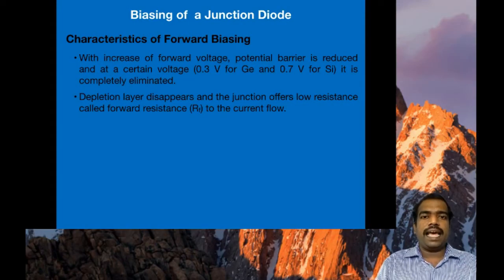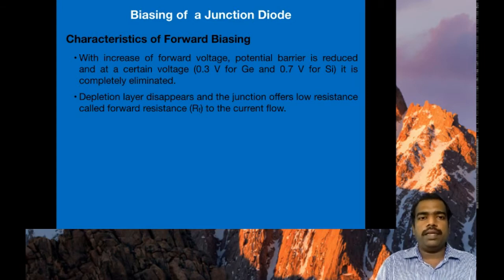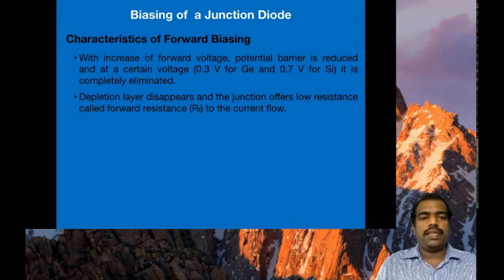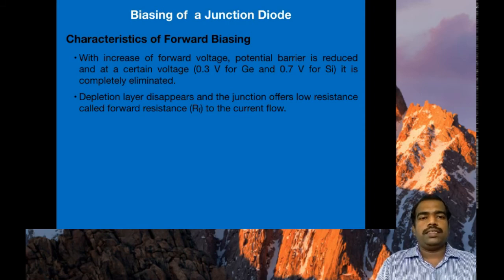These are the characteristics of forward biasing. As the forward voltage increases, the potential barrier is reduced, and at a certain voltage — 0.3 volts for germanium and 0.7 volts for silicon — it is completely eliminated. The depletion layer disappears and the junction offers low resistance, which is called forward resistance, to the current flow. So forward resistance is a low value. Next, we can learn about reverse biasing.